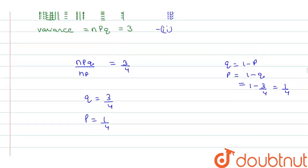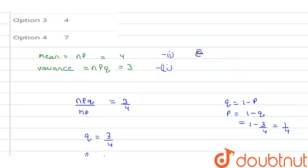Now by putting this value p into this equation we can get n multiply 1 by 4 this equal to 4. So from here we can say that n equal to 16.